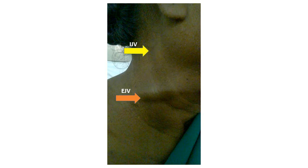Before showing you the video, observe the diagram: the orange arrow indicates the external jugular vein, which runs obliquely over the sternomastoid muscle. Just posterior to the angle of the mandible, the yellow arrow indicates the internal jugular vein. In the following video, you can see the pulsation of both the external jugular vein and the internal jugular vein.